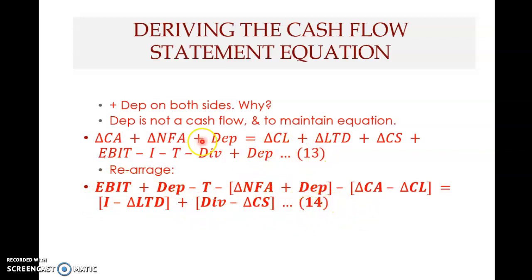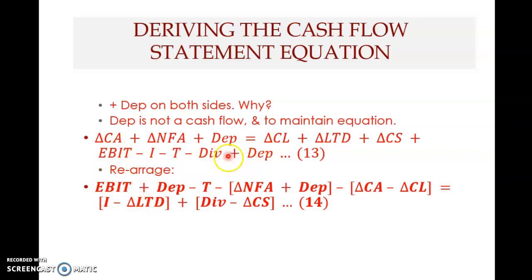What we have done here — this bold equation, equation 14 — is we take the elements in equation 13 and simply rearrange them. You still have two sides: the left hand side is a long mixture of many elements, and on the right hand side you have four elements. We change the position of these elements in equation 13 to become equation 14. For example, the first element here: EBIT is from here, then plus depreciation — EBIT plus depreciation gives you this value.